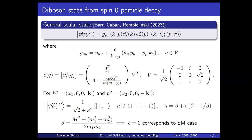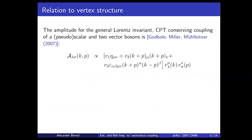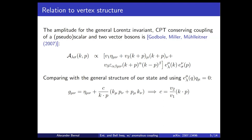When c equals zero we recover the standard model case presented before. So what is c physically? To answer this, we recall the amplitude for the general Lorentz-invariant CP-conserving coupling of a scalar to two vector bosons, using the parametrization from a specific paper. The amplitude is proportional to a sum of three terms: two CP-conserving terms and one CP-odd term involving the Levi-Civita tensor. Comparing this amplitude with our state's metric structure and applying the transversality condition, c is simply the ratio of couplings v2 to v1, weighted by the scalar product of the momenta.